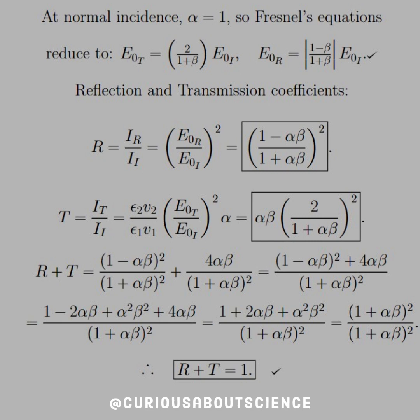So for at normal incident, alpha equal to 1, so the Fresnel equation is reduced to T equal to 2 over 1 plus beta E not i, and then E not R is equal to 1 minus beta over 1 plus beta E not i, exactly what we expect.